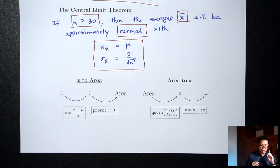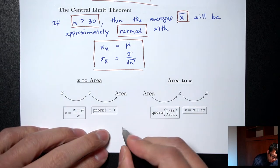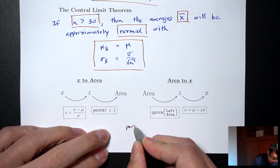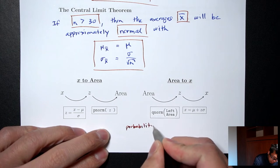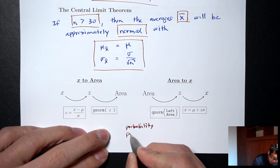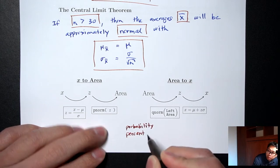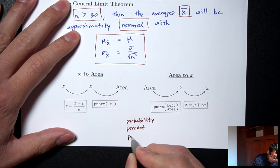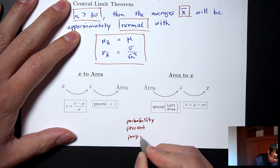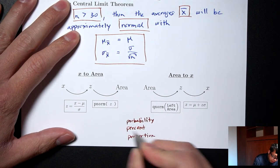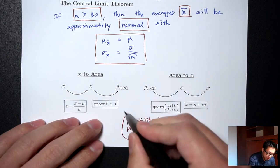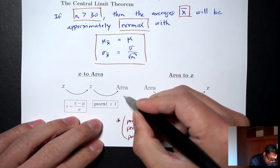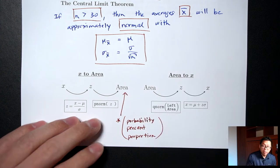Remember from the last lecture — there are three P words: probability, percent, proportion. Anytime you see those P words, you should think area.